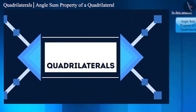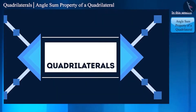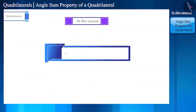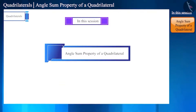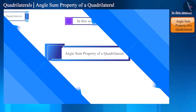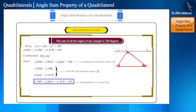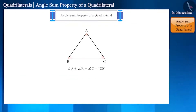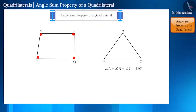Hello friends, welcome to this video on quadrilaterals. In the previous video we discussed about quadrilaterals and its types. Today we will discuss about the angle sum property of a quadrilateral. We have studied the angle sum property of a triangle — a triangle has three angles and the sum of the three angles of a triangle is 180 degrees. A quadrilateral has four angles; can you guess what will be the sum of all the angles of a quadrilateral?